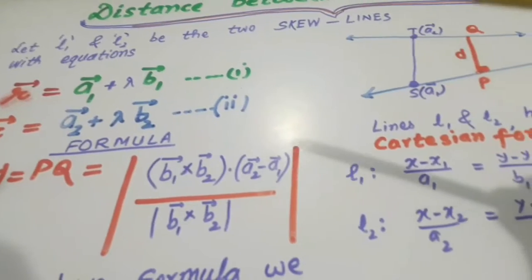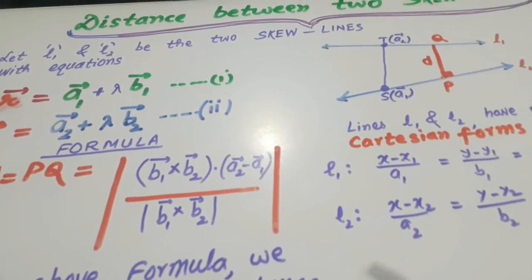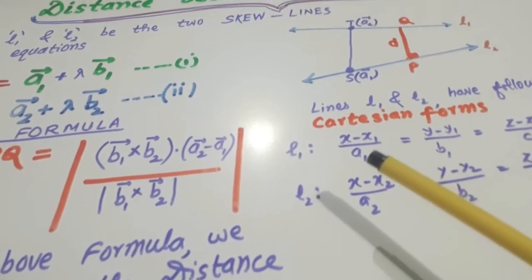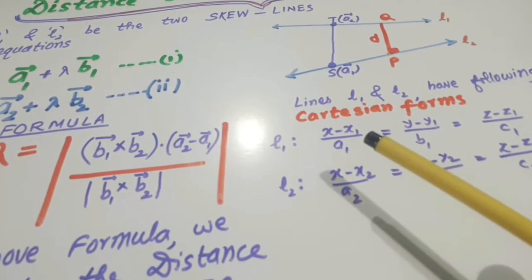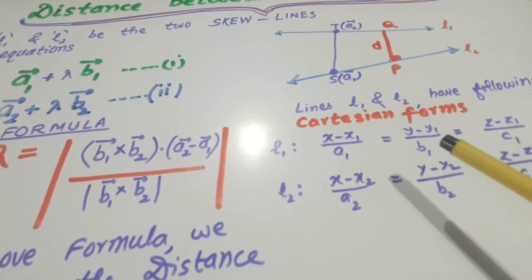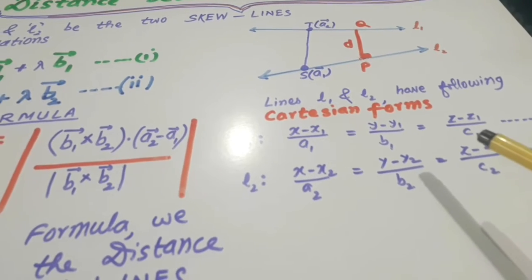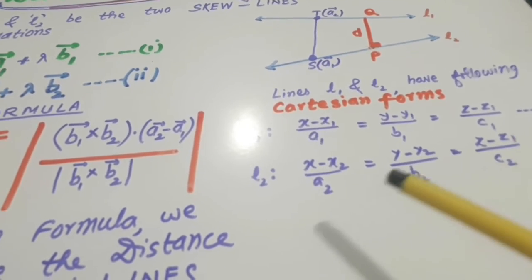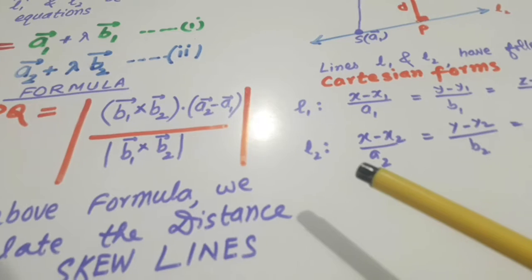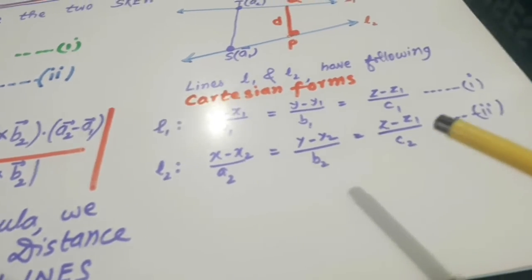Now, the Cartesian shape of lines are L1 is X minus X1 over A1 equals Y minus Y1 over B1 equals Z minus Z1 over C1. Similarly, L2 is X minus X2 over A2, Y minus Y2 over B2 and Z minus Z2 over C2.